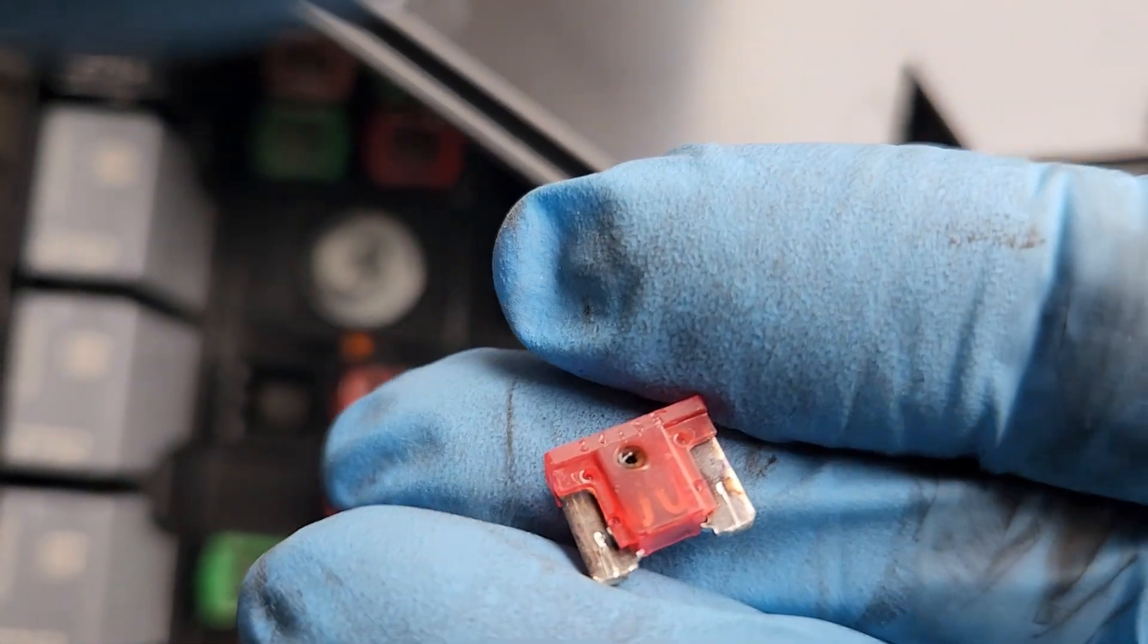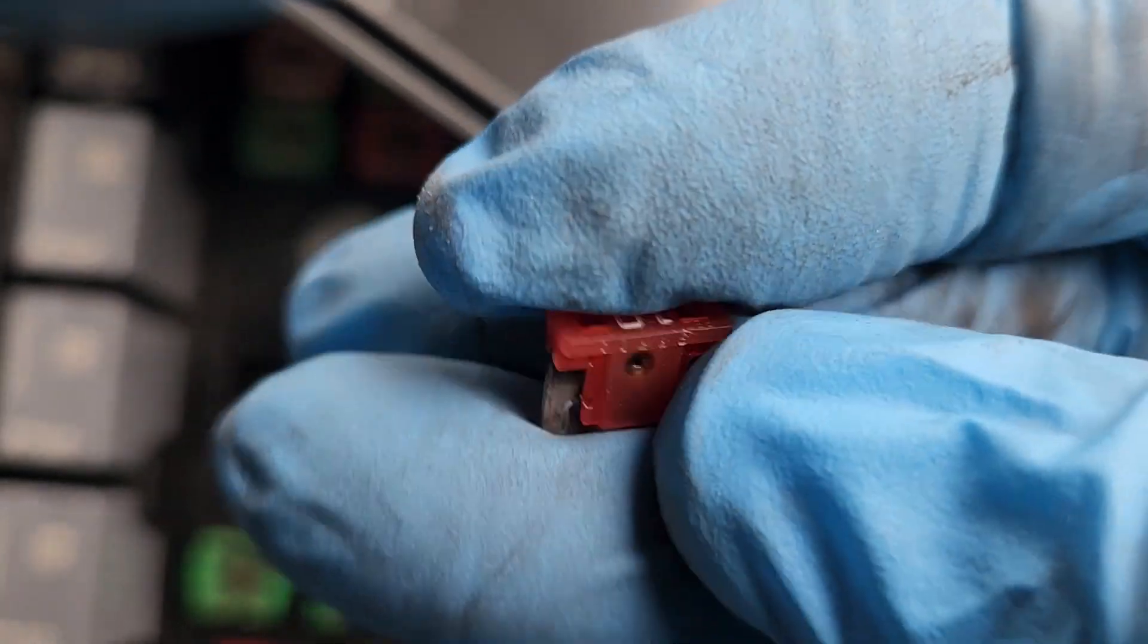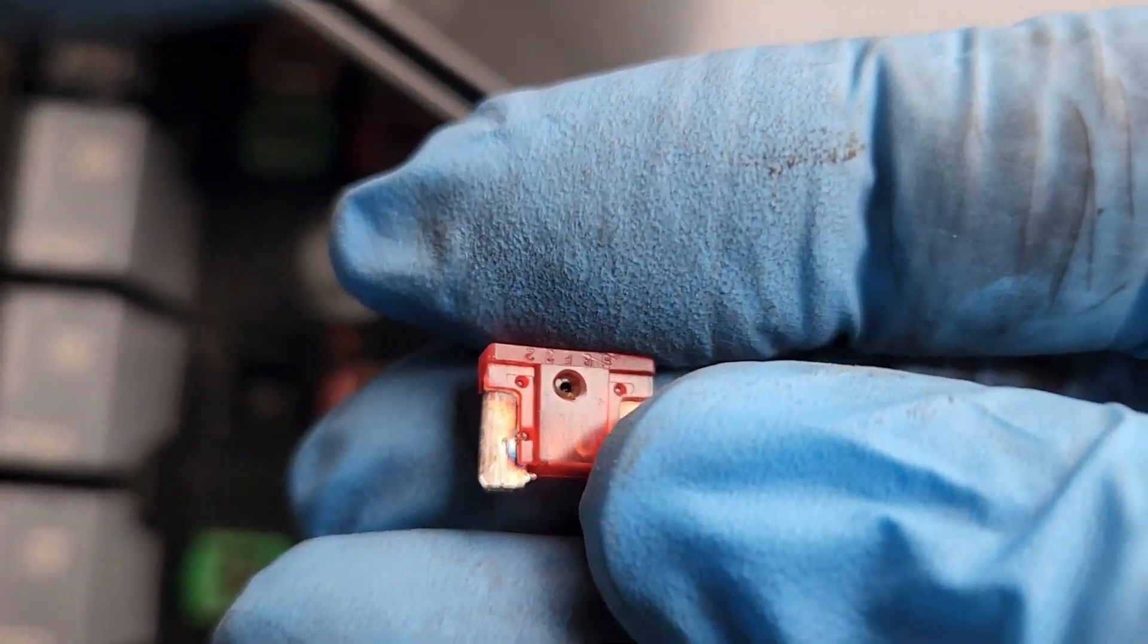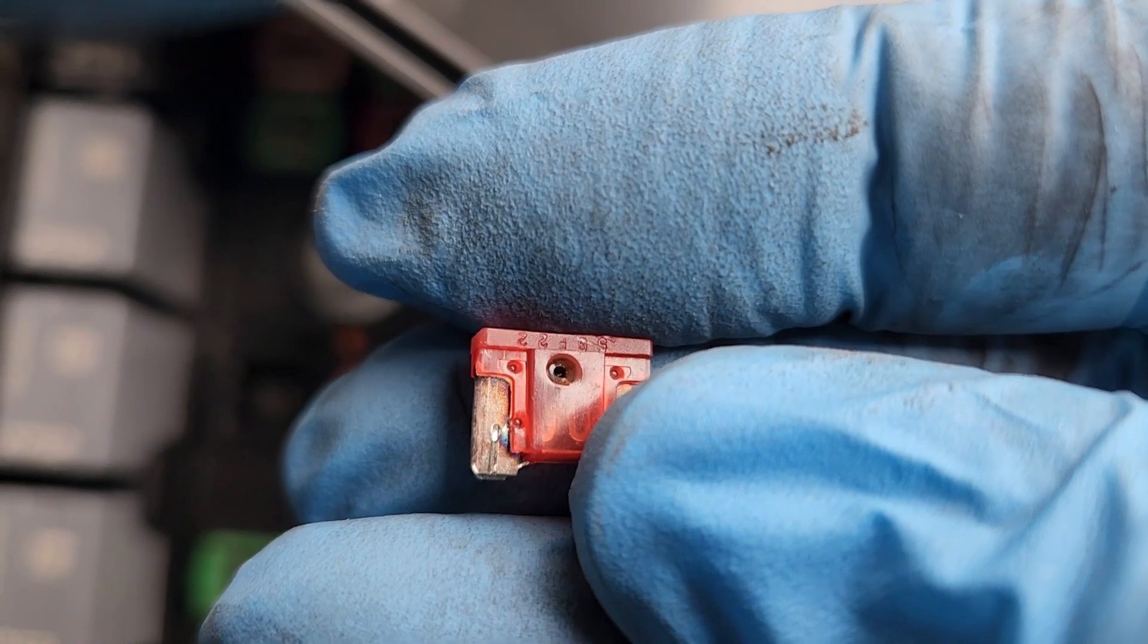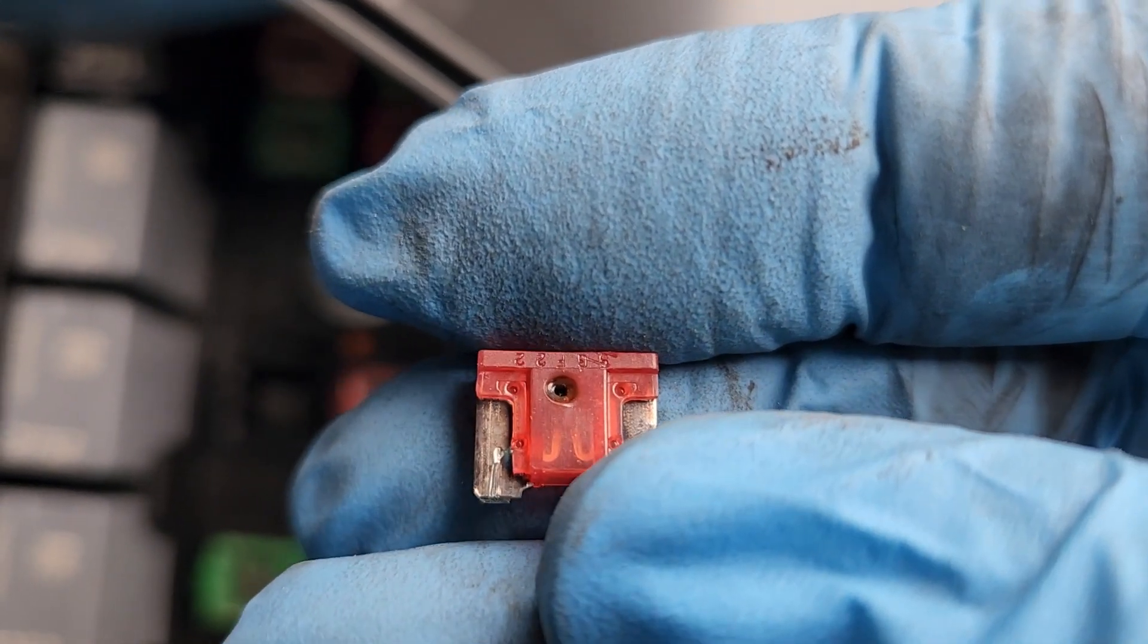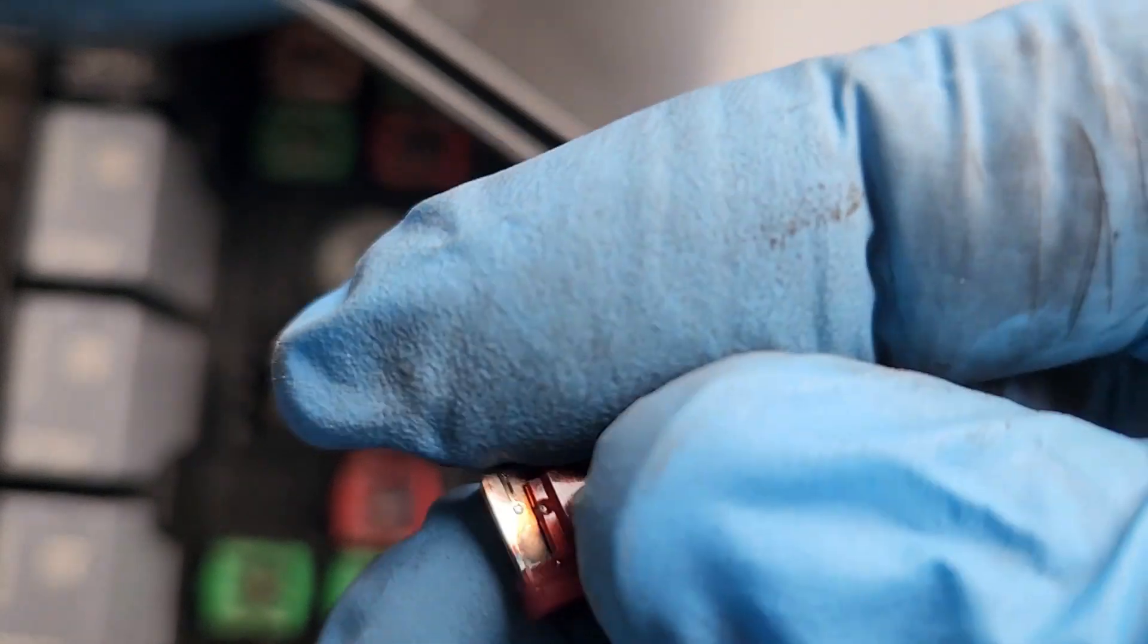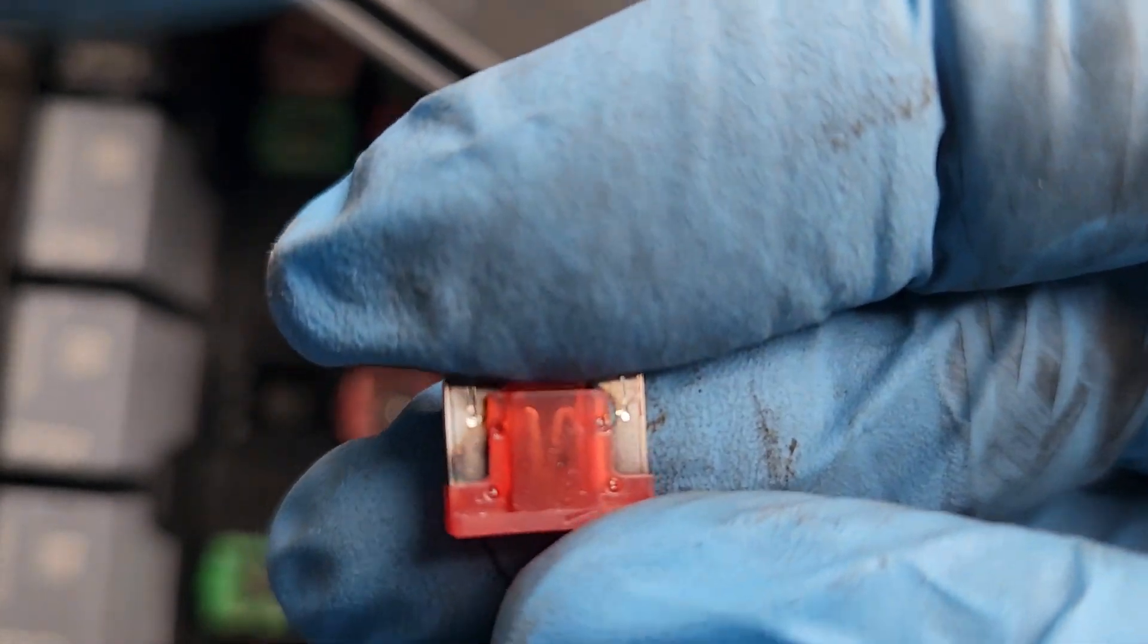Yep, you can see it's melted, and it's from overheating, and I've run into this problem before. What happens is the bulbs in the back are 7444s, and they draw just a little bit too much current. You need to go back to 7443 bulbs.